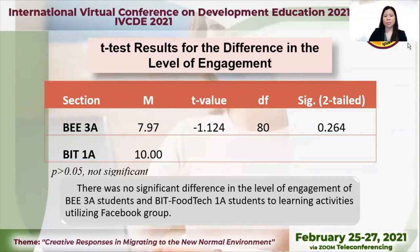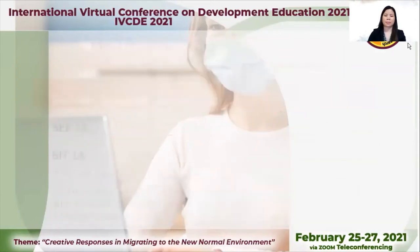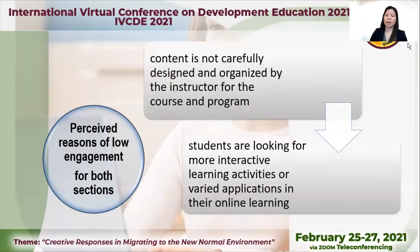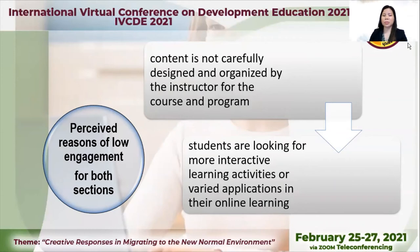As to the t-test results for the difference in the level of engagement, there was no significant difference in the level of engagement of BEE 3A students and BIT Food Tech 1A students to learning activities utilizing the Facebook group. The perceived reasons of low engagement for both sections: first, content is not carefully designed and organized by the instructor for the course and program; and students are looking for more interactive learning activities or varied applications in their online learning. That's why the competence of the instructor is a must in the implementation of the online platform, because the content must be interactive so students will get engaged.